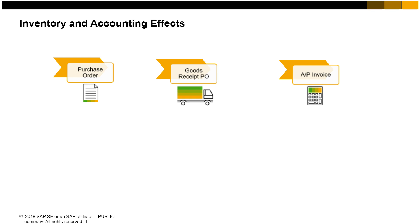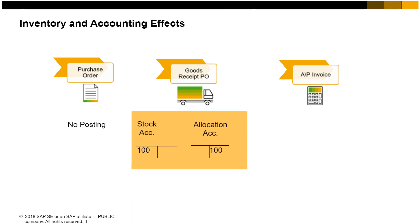Now let us take a look at the procurement process and its effect on inventory and accounting. When a purchase order is created, there are no postings in inventory and accounting. The first posting will be made when a goods receipt PO is entered. The GRPO creates a journal entry that posts the value of the received goods to the debit side of the stock account and to the credit side of an allocation cost account. The stock account and the allocation cost account are retrieved from the inventory account field and the allocation account field on the inventory data tab of the item master record. The allocation cost account is a transfer account used to check if goods receipt POs and the AP invoices match. The allocation account's total balance represents the value of all open goods receipts POs that are not yet copied to an AP invoice.